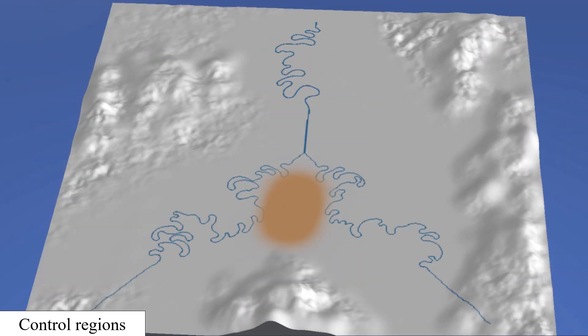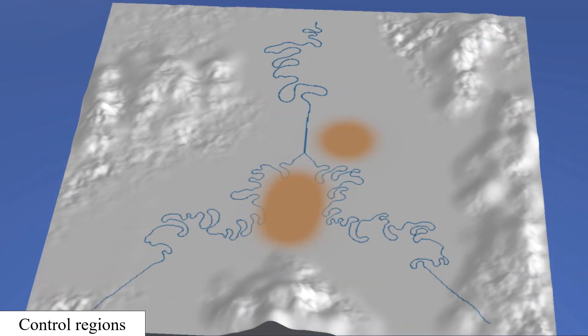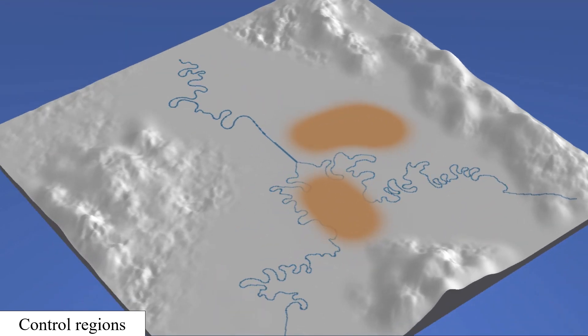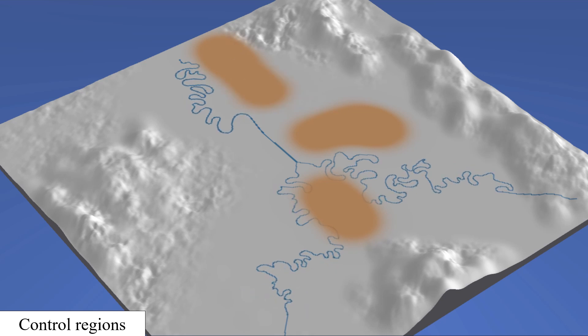Here, the user uses tools that influence the development of meanders. Here, the user places repulsive regions to prevent the channels from migrating in these areas.